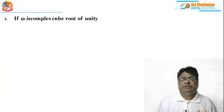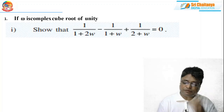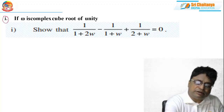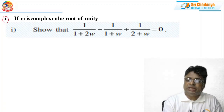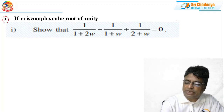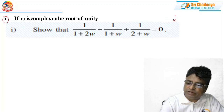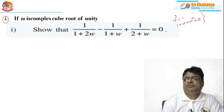Let us concentrate on the first problem. See the statement: if omega is a complex cube root of unity, then show that the given expression is equal to 0. This is a very important question for board as well as Mains-type examinations. The key relations to use are: omega cubed equals 1, and 1 + omega + omega² = 0.